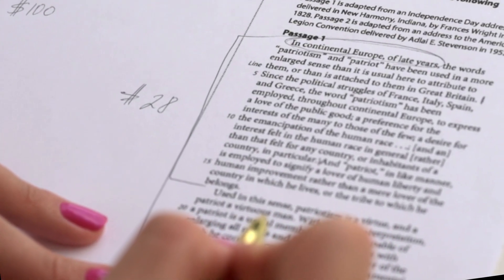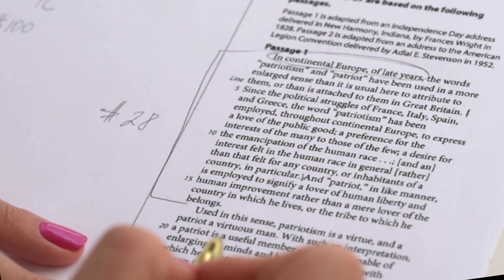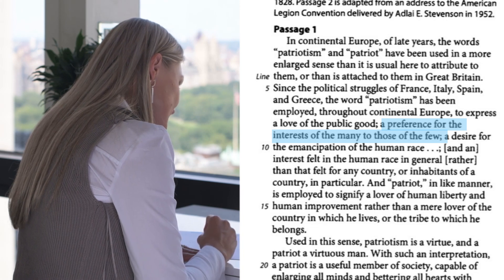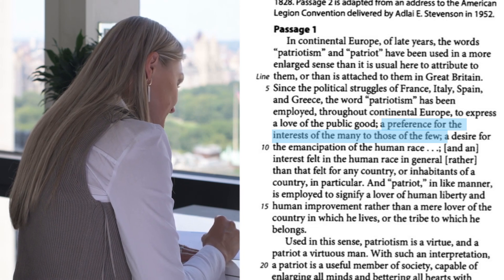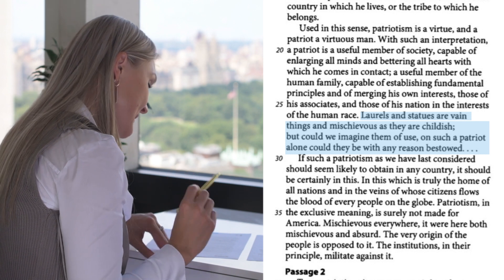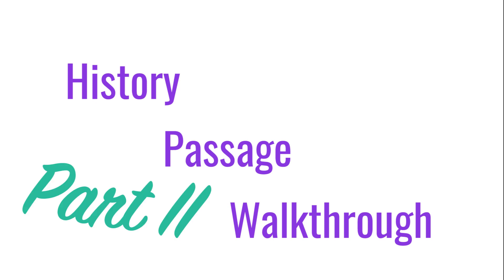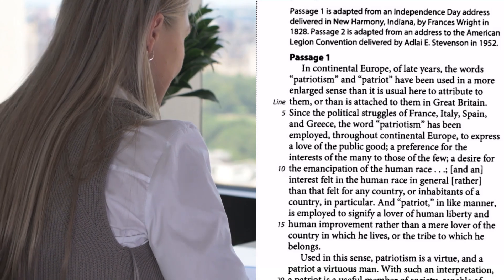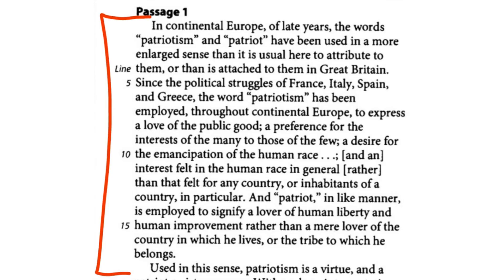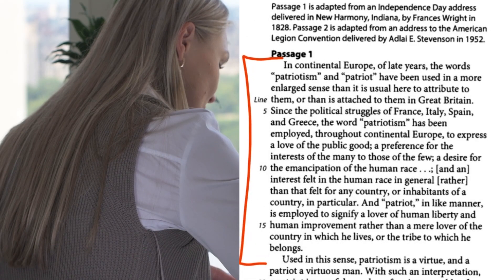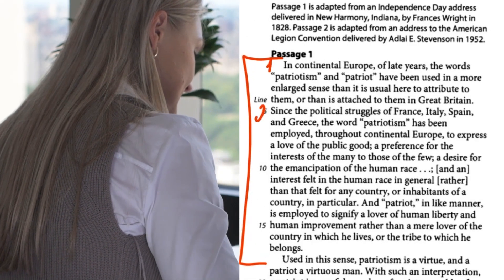Our job right now is to find our subjects and to find our verbs. Right here: a preference for the interests of the many to the interests of the few. Florals and statues of vain — vain means conceited. When I'm looking at this first paragraph, I'm going to notice something. I only have three sentences. This is sentence number one, sentence number two, sentence number three.